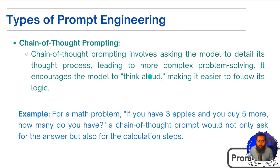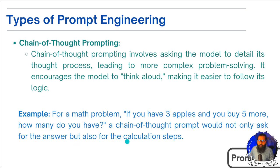The third type is Chain of Thought Prompting. Chain of Thought Prompting involves asking the model to detail its thought process, leading to more complex problem solving. It encourages the model to think aloud, making it easier to follow its logic. For a math problem — if you have three apples and buy five more, how many do you have — a Chain of Thought prompt asks not only for the answer but also for the calculation steps. You would ask 'What is the capital of France, and let me know how you decided on Paris or another city.'